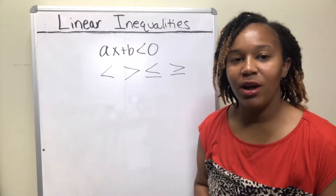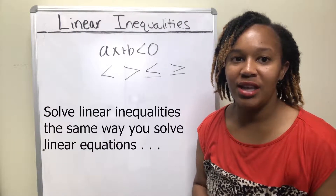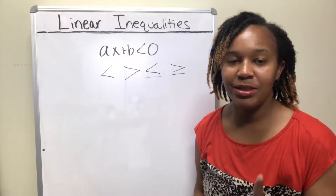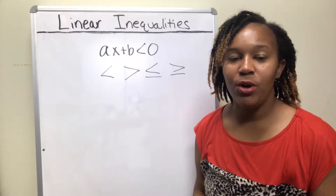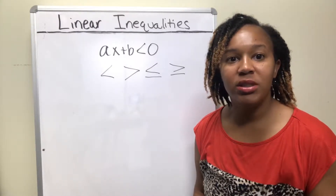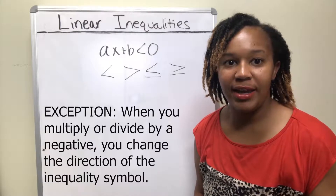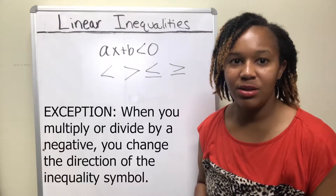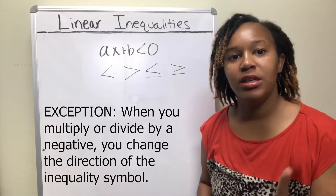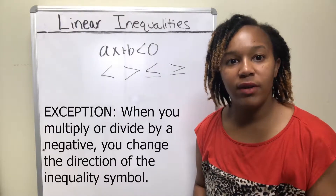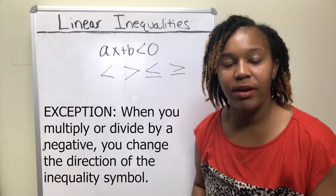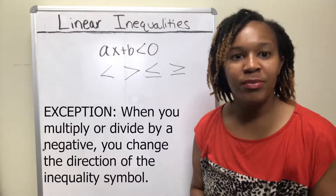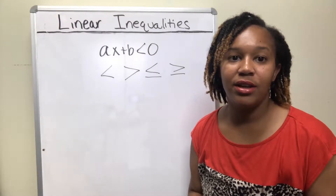How do you solve linear inequalities? You solve them the same way you solve linear equations, except with one exception. That one exception is whenever you multiply or divide by a negative number, you have to change the direction of the inequality symbol. Other than that, it's just like solving a linear equation.